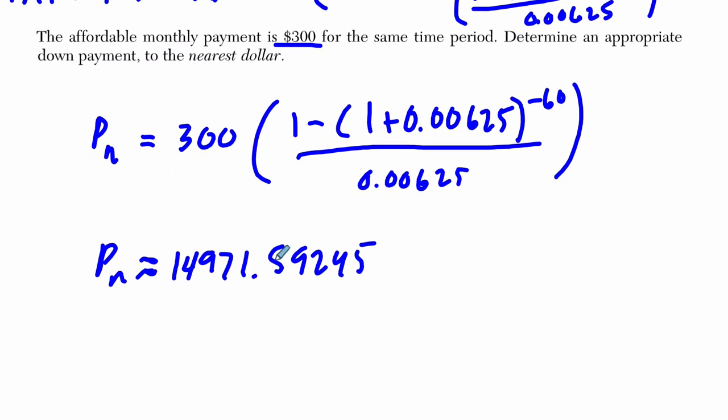Okay, so that means you borrowed this much, but the car was $21,000 to begin with. So if you take $21,000 minus P sub N, that will get you the answer you need, right? The car is $21,000.